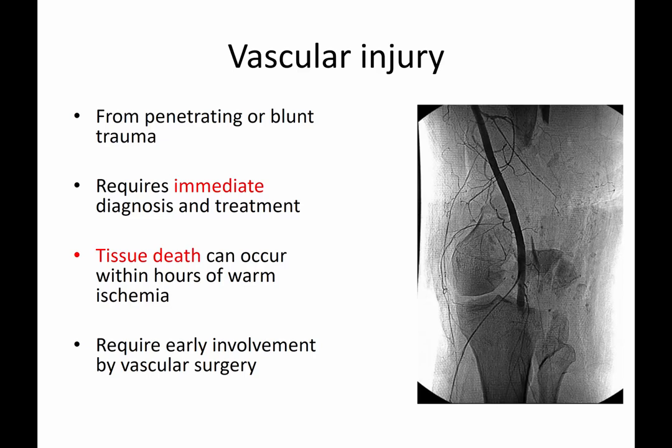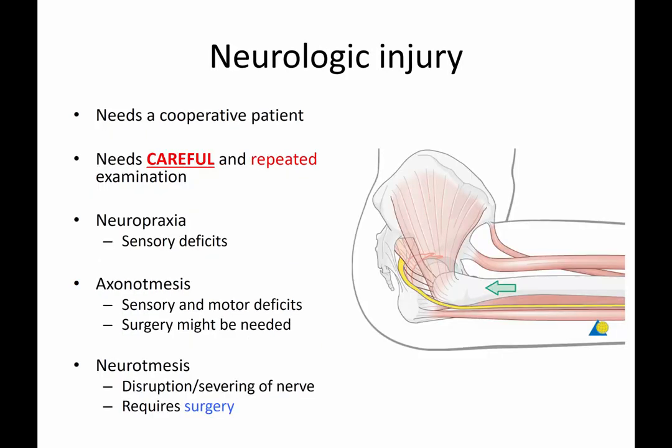This case shows significant bone loss in the distal femur, and here you can see the popliteal artery comes to an abrupt stop. So clearly there is a problem with arterial flow distally.